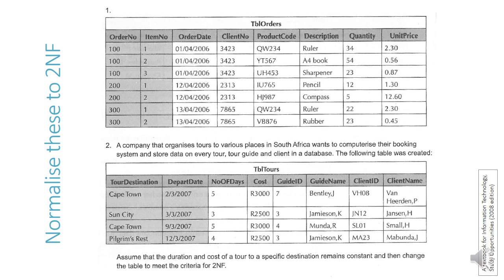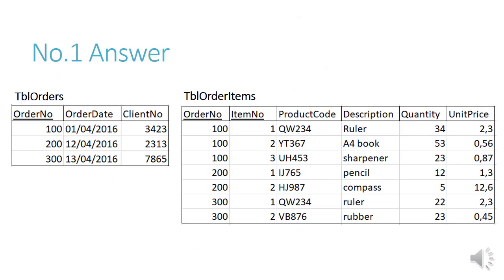You need to try and normalize these tables to second normal form. The first is the table Orders which we saw earlier, and the second is table Tours. The answer for number one: table Orders will have order number, order date, and client number in the first table; and table Ordered Items will have all the rest of the data, including the composite key, in the second table.